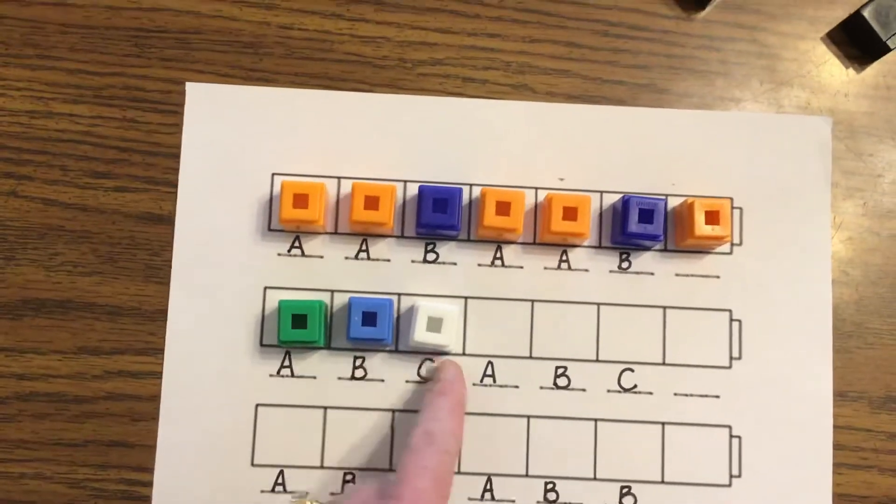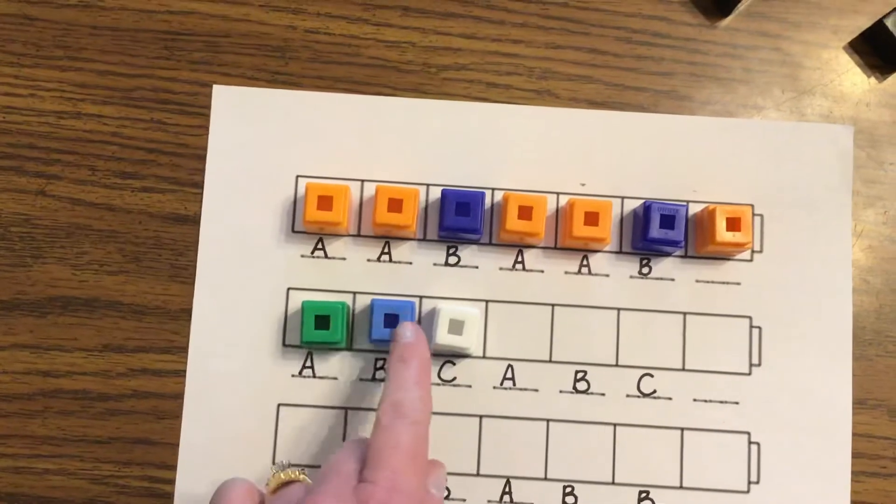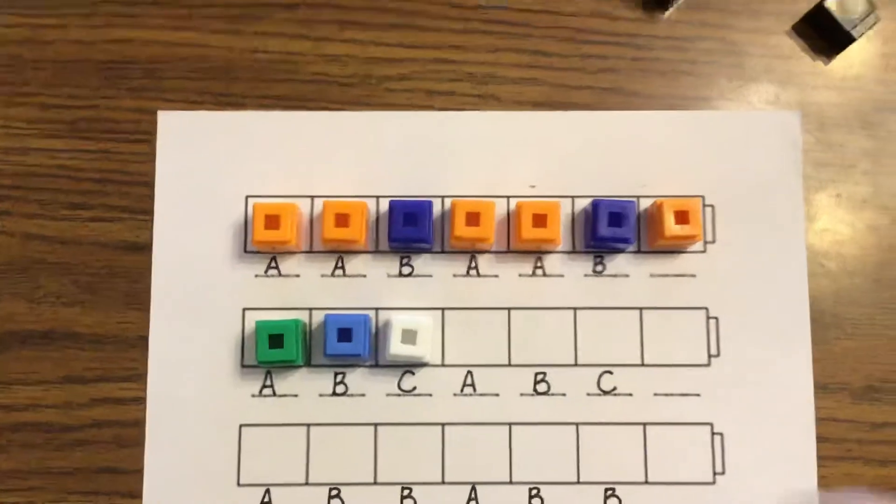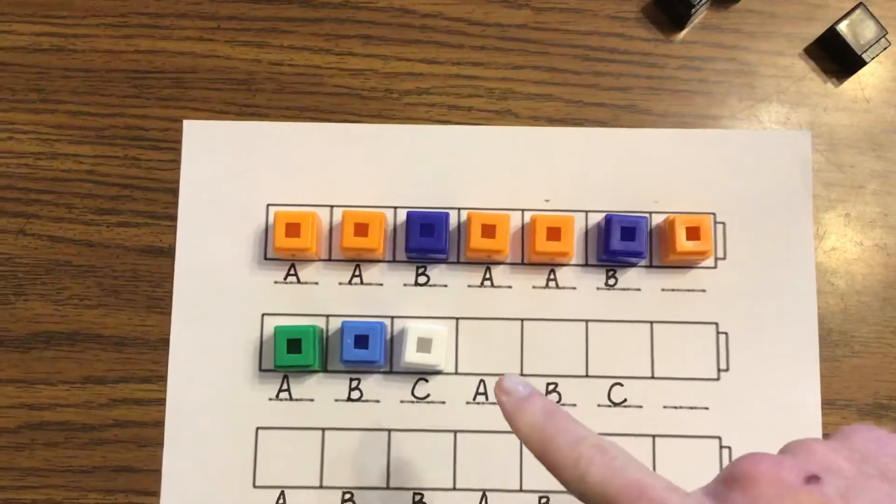A, B, C. Green, blue, white. So what's my A going to be then? My A, like over here, was a green.